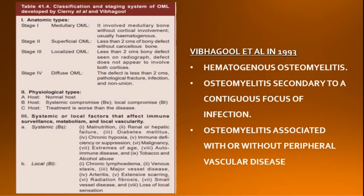Siani et al. and Vibhagool developed a classification and staging system based on anatomic location of the infectious process, the physiologic status of the host, systemic or local factors affecting the immune system, metabolism, and local vascularity. A classification based on pathogenesis of altered vascular perfusion as a factor in the presence and persistence of osteomyelitis was given by Vibhagool in 1993.